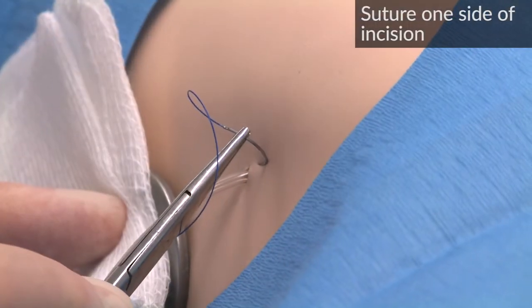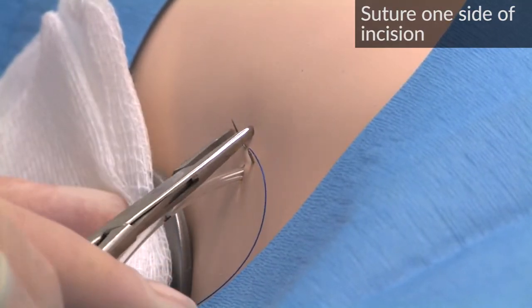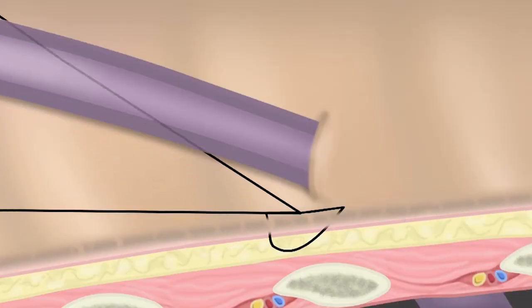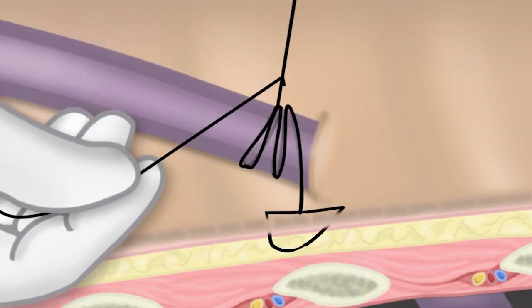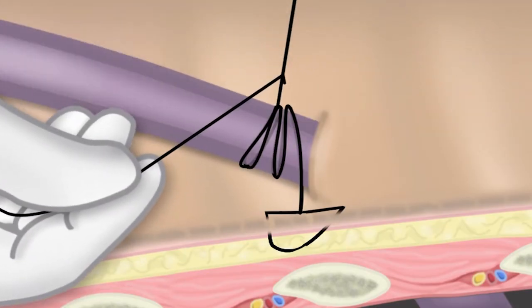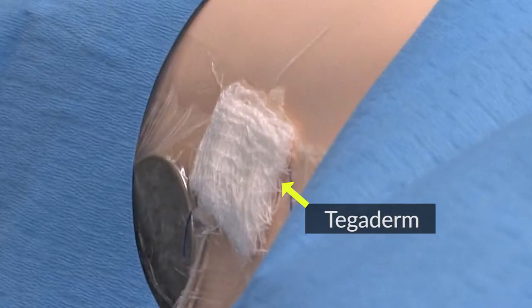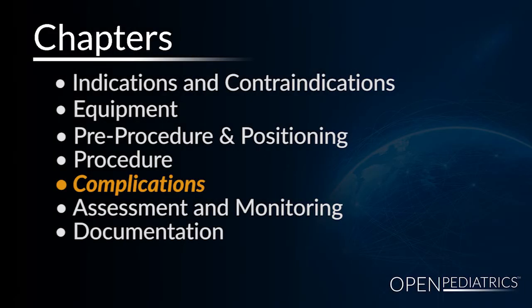Suture one side of the incision. Wrap and tie the free end of the suture around the chest tube. Apply occlusive petroleum dressing at the level of the skin. Cover with a small amount of dry gauze and secure with Tegaderm. Obtain a chest x-ray to verify position.